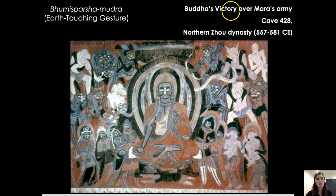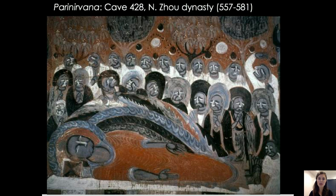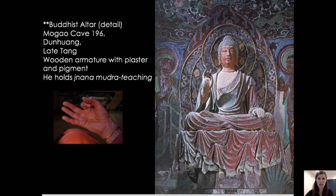Here we can see the parinirvana — the idea of the Buddha reclining, referring to the moment of the Buddha's implied death, but really the Buddha is moving on to nirvana, moving on to a better place. Here we can see cave 196 that comes from the late Tang. We start to see the Buddha changing in the Tang dynasty — much fuller face, and those rolls around the neck are often a good hint. In this particular case you can see the teaching gesture of the Buddha.